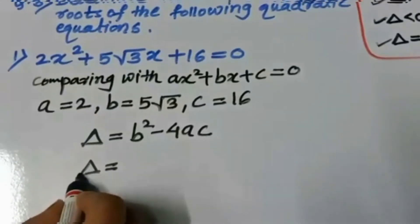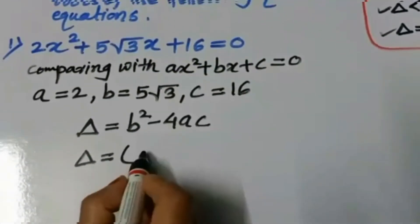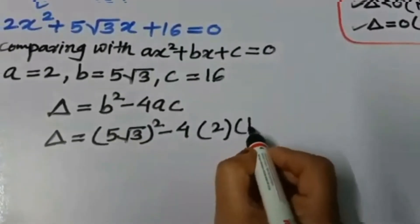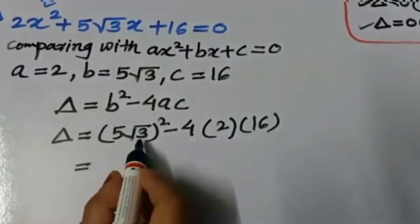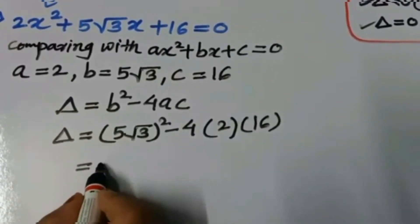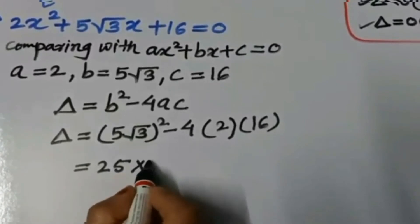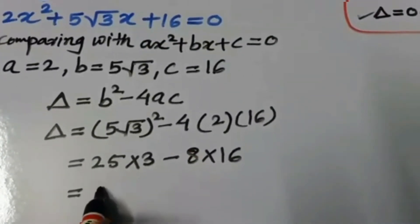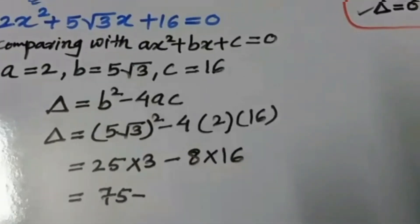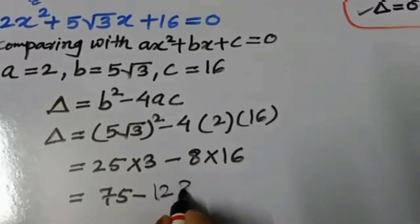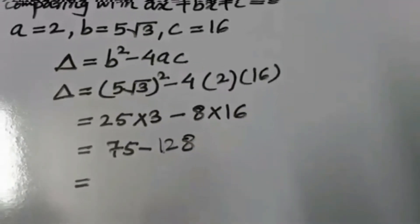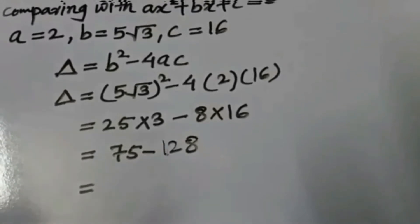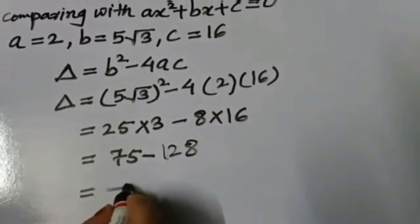Now substituting the values: delta = (5√3)² minus 4 × 2 × 16. To solve (5√3)², we take the square of 5, which is 25, multiplied by the square of √3, which is 3, giving 75. Then 4 × 2 × 16 = 128. So delta = 75 minus 128 = negative 53.